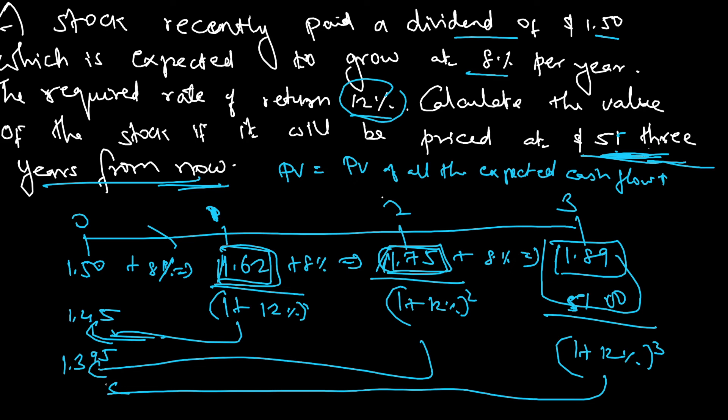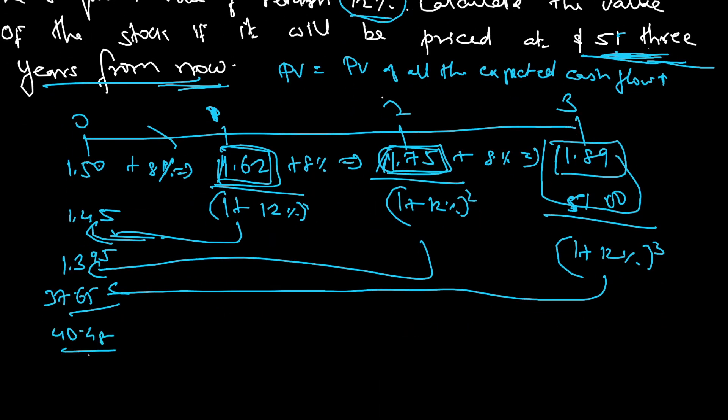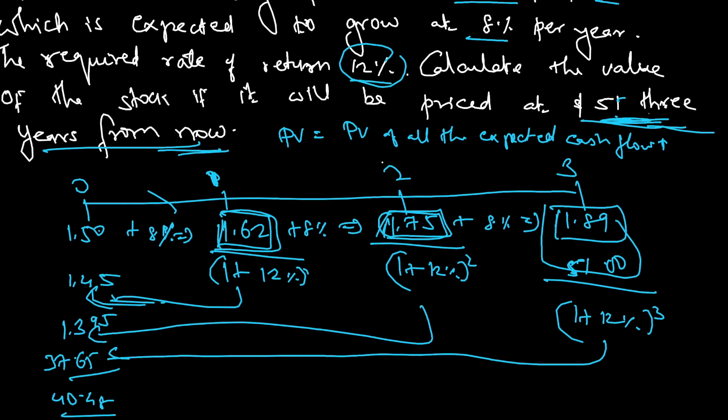This comes to 37.65. Overall when I add all this it comes to 40.48. So 40.48, this is the present value of the stock. This should be the present value of the stock.